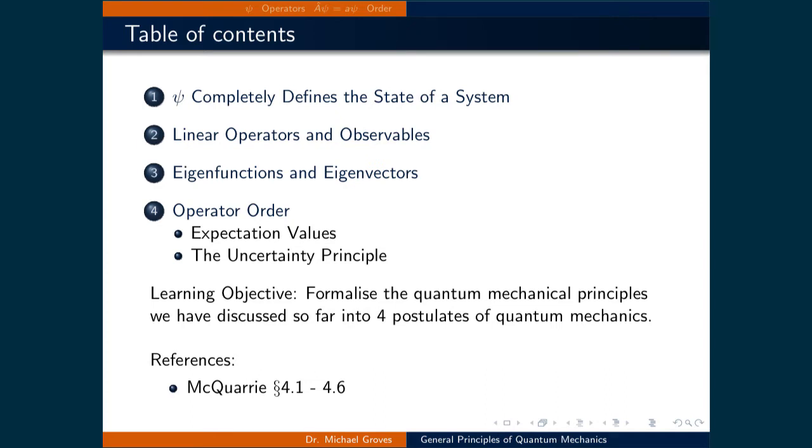This lecture is broken up into four pieces, where each piece is related to each of the four postulates. These four postulates are: psi completely defines the state of a system, classical observations have a linear operator associated with them, solutions to the Schrodinger equation are eigenfunctions with eigenvalues, and the order operators are applied can matter. The expectation value of a quantity and the Heisenberg uncertainty principle can be derived from this fact.